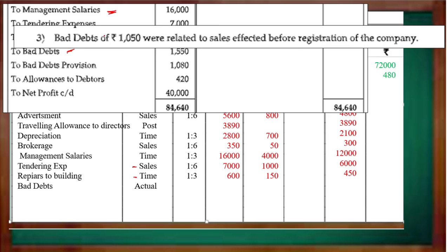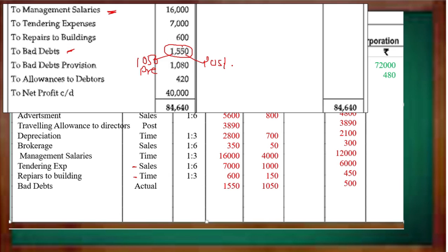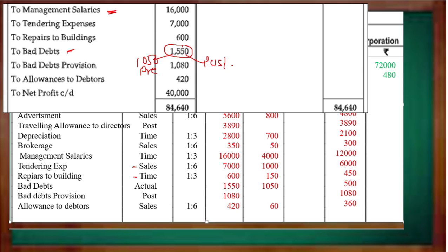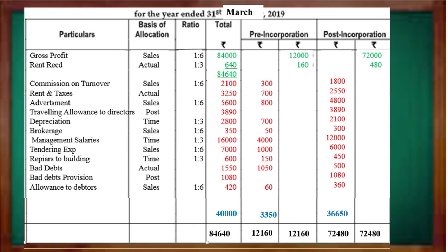Bad debts of 1050 — sales affected before registration go directly to Pre. The total bad debts answer is Pre only. Provision for bad debts is after incorporation, so it goes directly to Post. Allowance to the debtors and customer data is based on Sales — very simple.